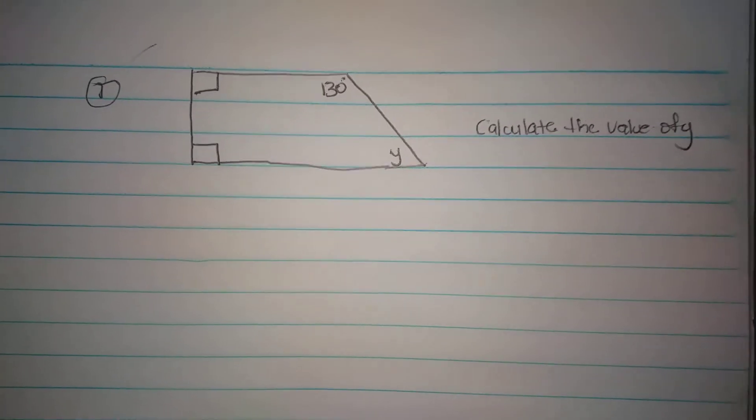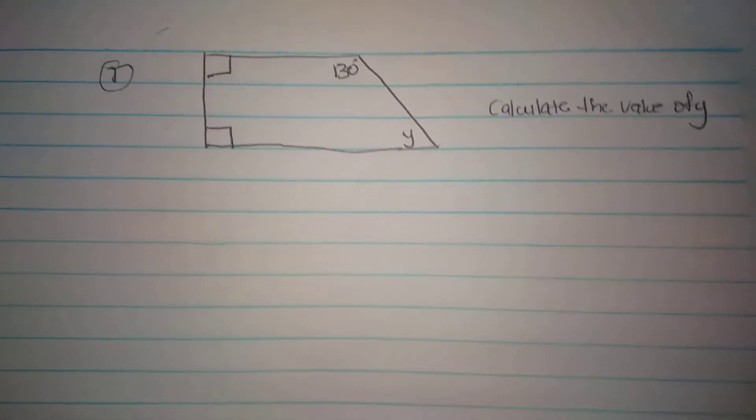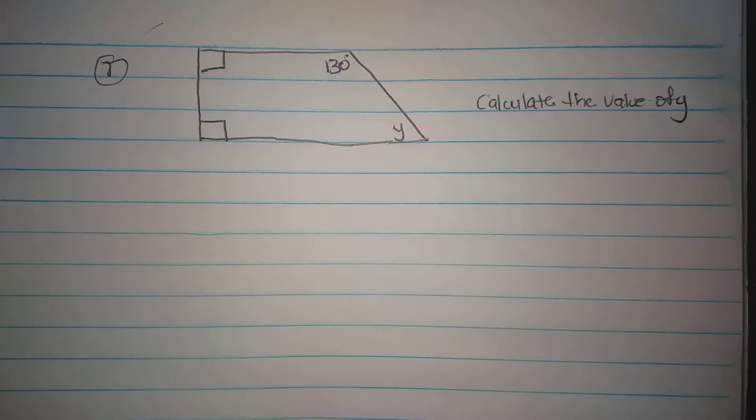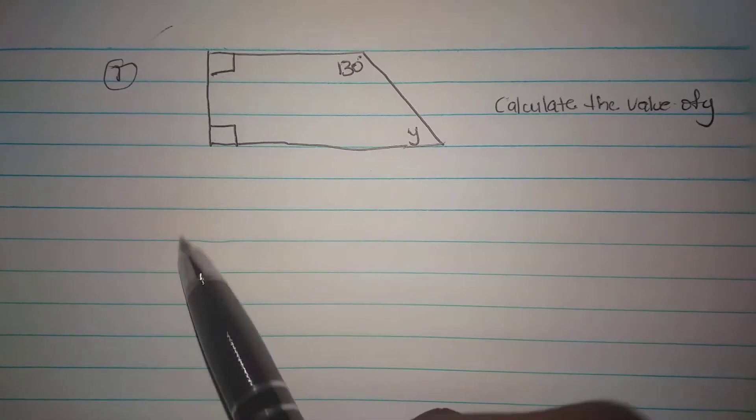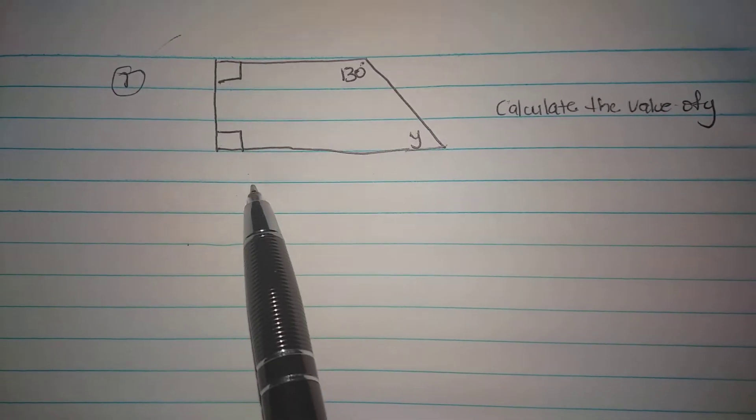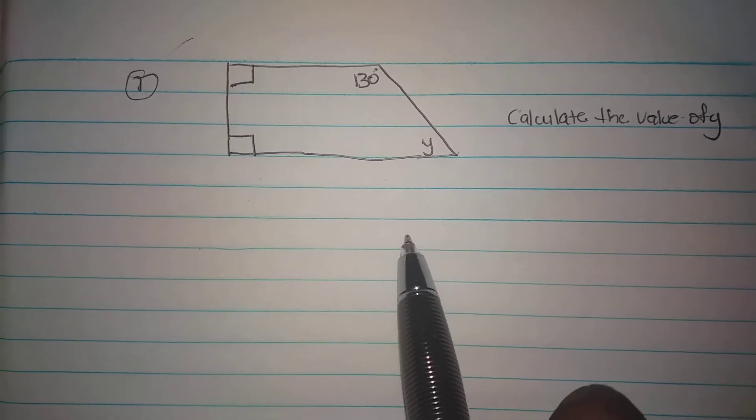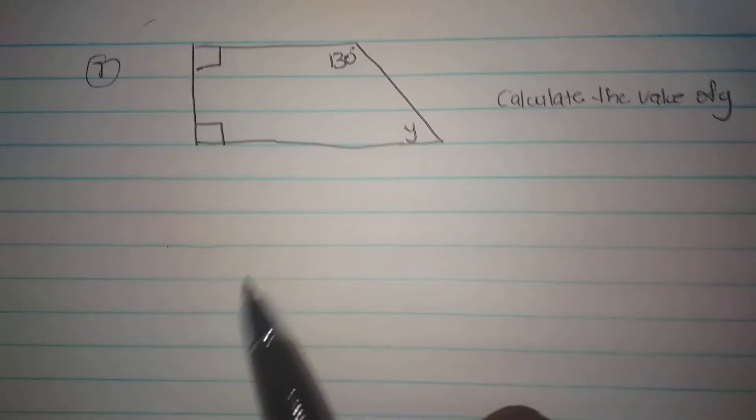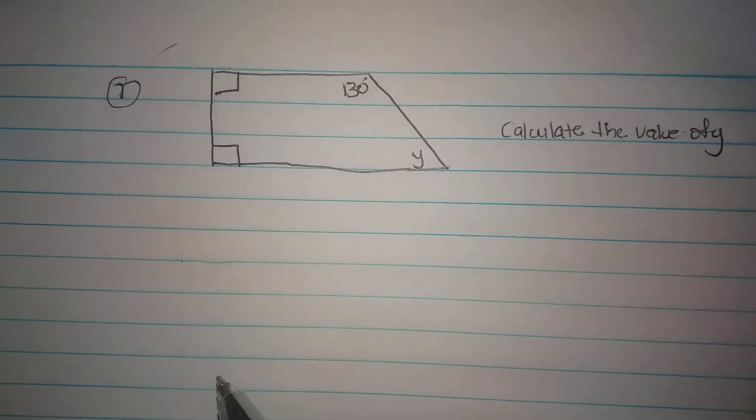Hi guys, we're asked to calculate the value of y. We have here a quadrilateral called a trapezium—it's actually a right angle trapezium. These boxes here represent 90 degrees. You would remember from our last class that the sum of the interior angles in a quadrilateral adds up to 360 degrees.